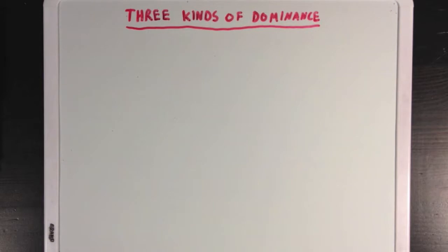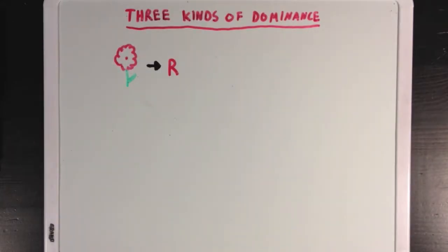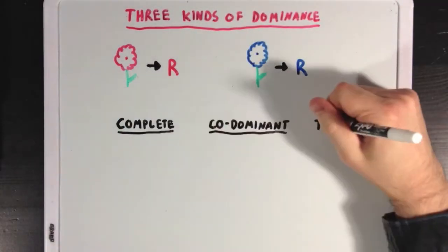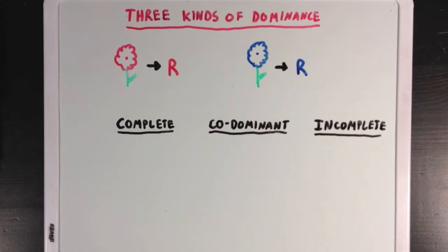To explain this, I'm going to use a different example. Let's say we have this flower, where the red petal phenotype is coded for by the red R allele, and the blue flower phenotype is coded for by the blue R allele. I'm going to introduce three different patterns of dominance: complete dominance, which you've already heard of, codominance, and incomplete dominance. I'll explain these two new patterns through this flower example.